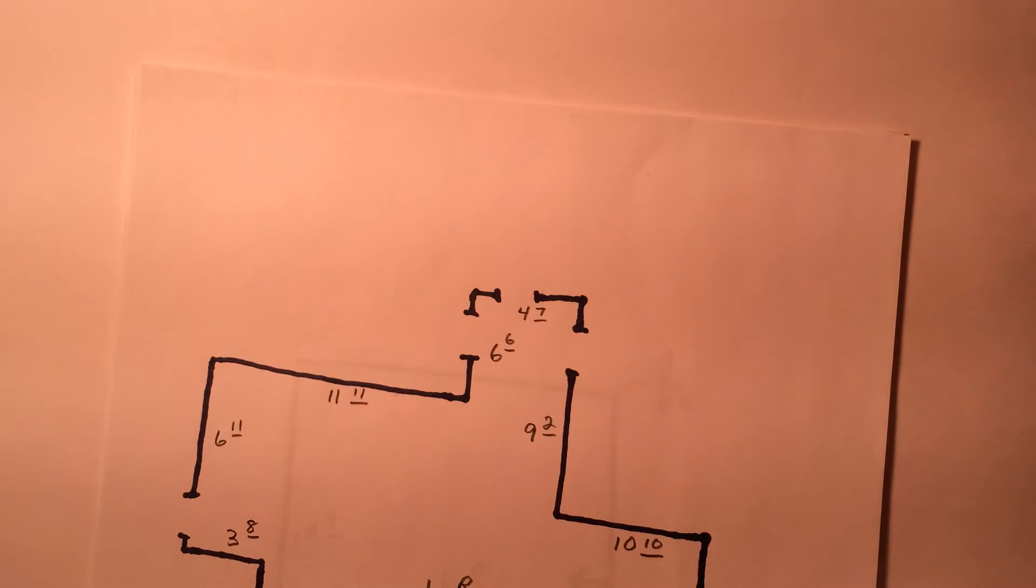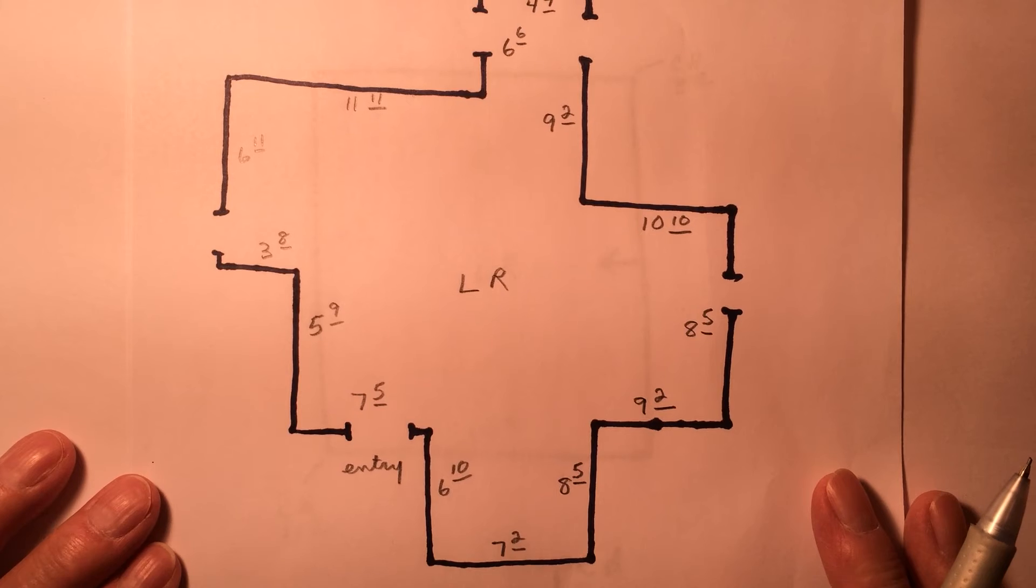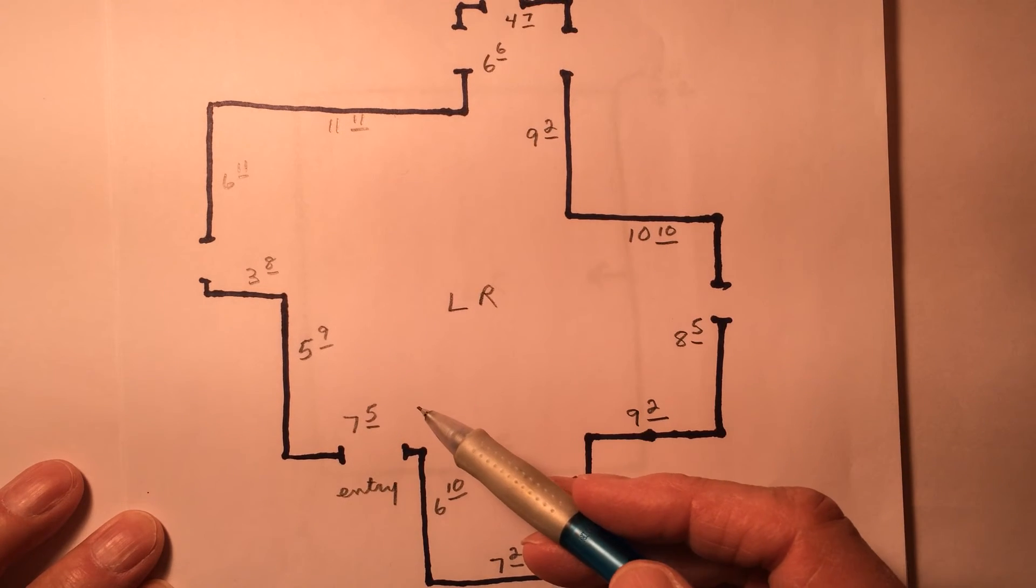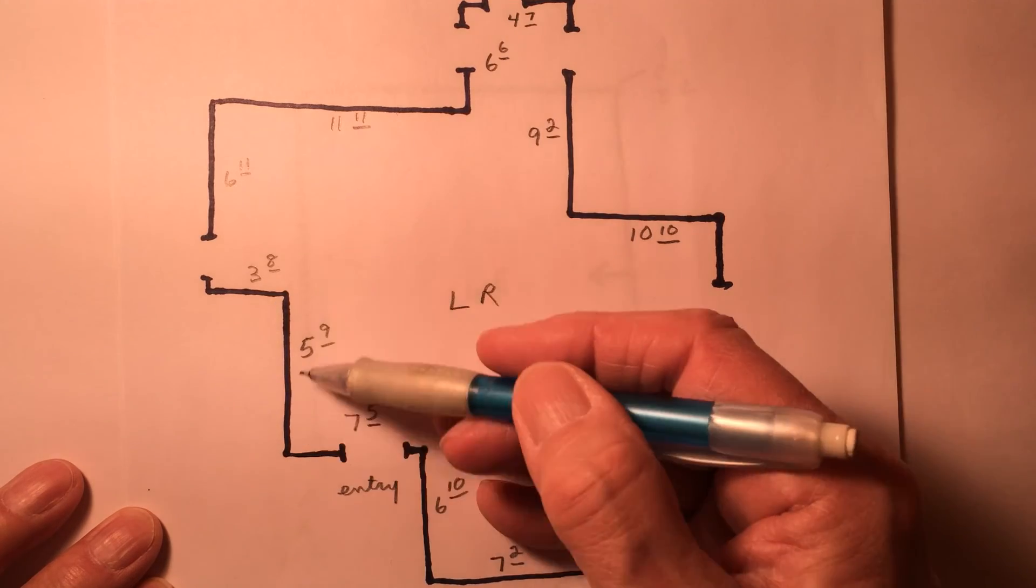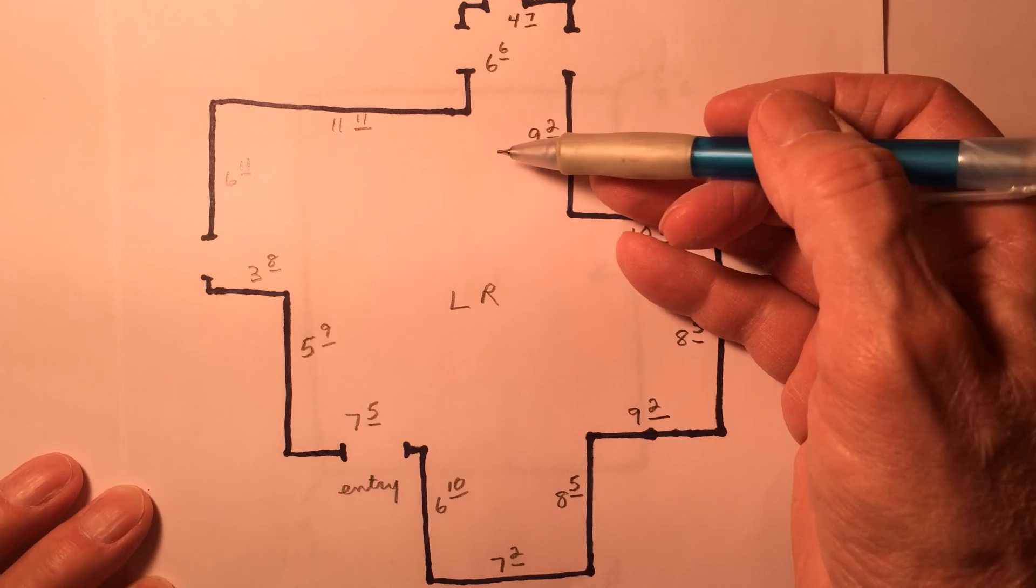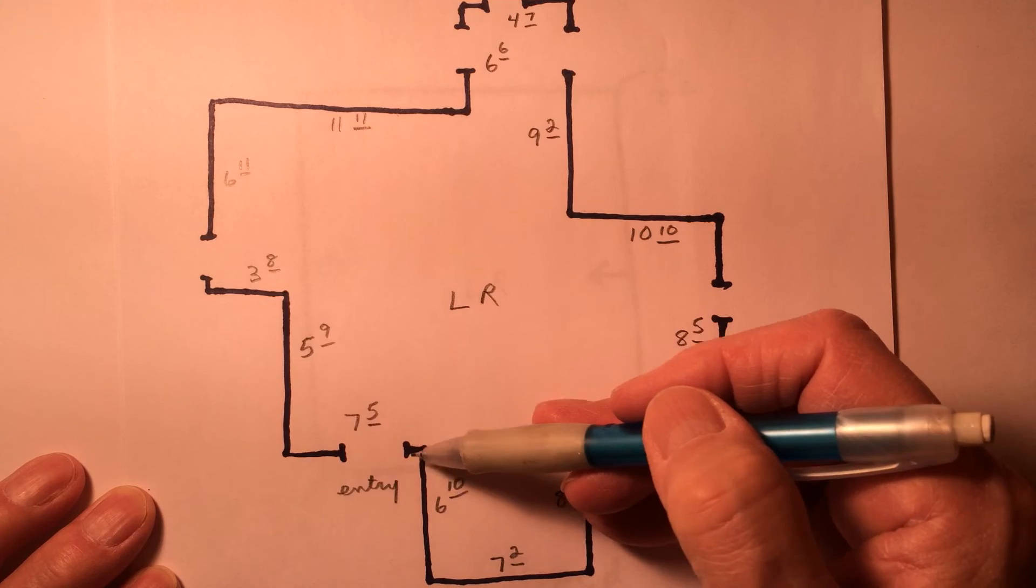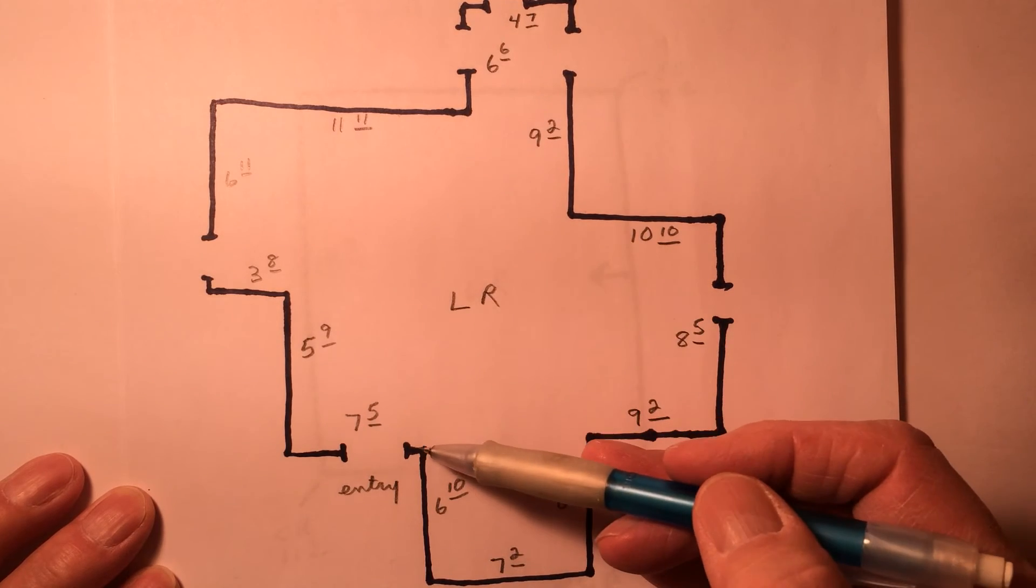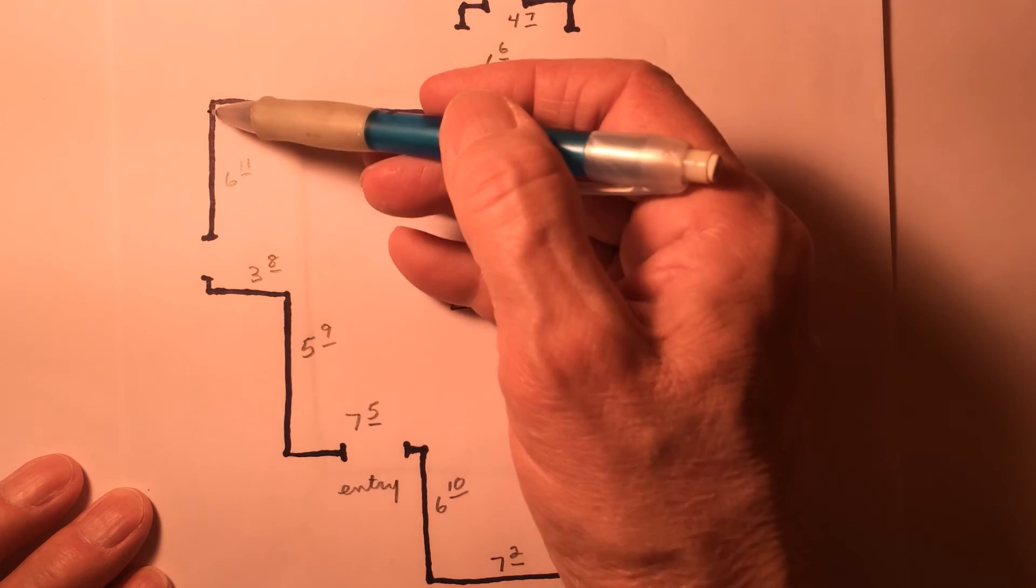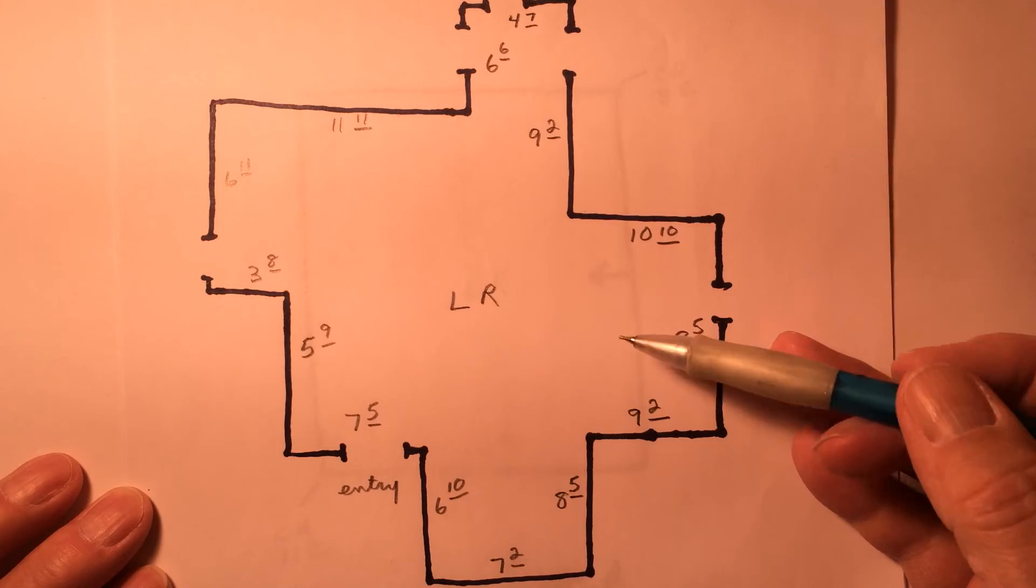This is a much more difficult room. What you have to do in a case like this is stand in the room somewhere and start drawing. Just start somewhere and draw the lengths of these walls proportionally. You can learn how to do this. Nothing lines up here. None of these walls line up. So, this being the case, we need every segment of this room measured. Yes, every wall needs to be measured.